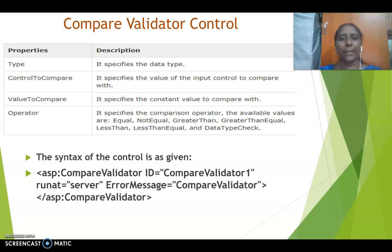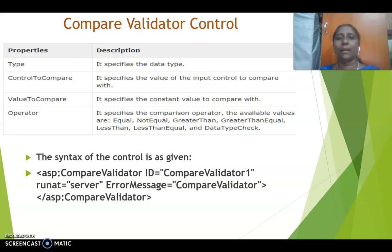Next, the compare validator control. Here you will be having two values to compare, so we need two controls — one is the control to compare and the second is the value to compare. You will be giving two IDs, that is two text boxes, and you can check whether the two text box values are the same. For example, if you want to use password and confirm password, you can use this compare validator to ensure the same value is entered in both fields.